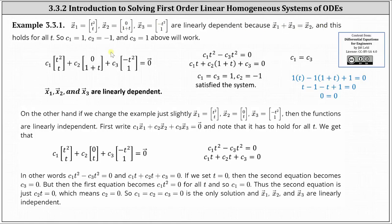Applying the definition, we have c1 times x1 plus c2 times x2 plus c3 times x3 equals a zero vector, which gives us the system of equations shown here on the right. Looking at the first equation, notice this indicates c1 must equal c3. So if we let c1 equals c3 equal one, for example, then if we let c2 equal negative one, the second equation is also satisfied. We found a solution where c1, c2, and c3 are not all equal to zero, indicating the three vector-valued functions are linearly dependent.